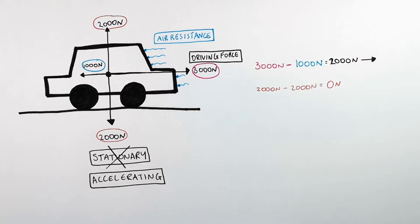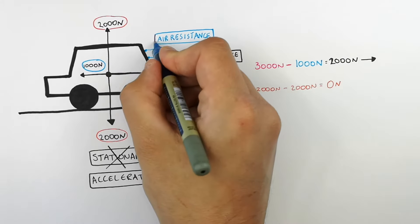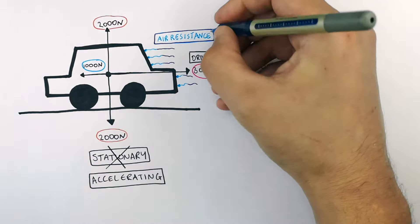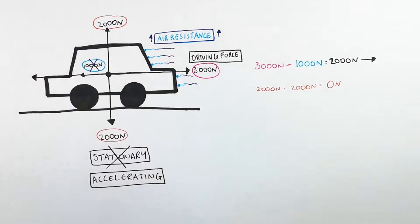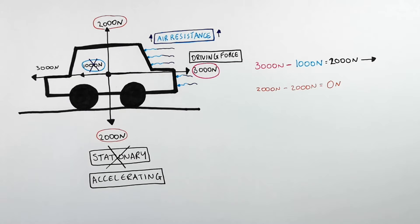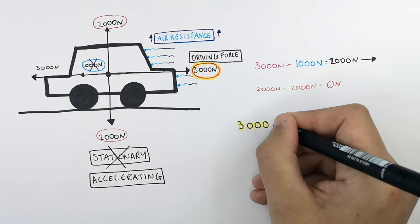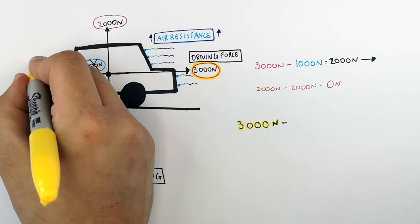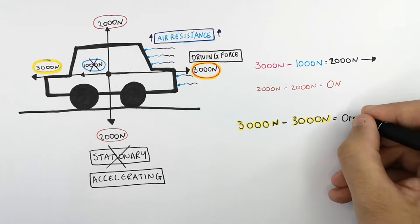As the car increases its speed due to acceleration, there's going to be an increase in air resistance acting on the car. So if the air resistance acting on the car increases from 1,000 newtons to a force of 3,000 newtons, we can now calculate the new resultant force. To calculate the new resultant force, you do 3,000 newtons of the driving force minus the 3,000 newtons of the air resistance, which gives you a resultant force of 0 newtons.